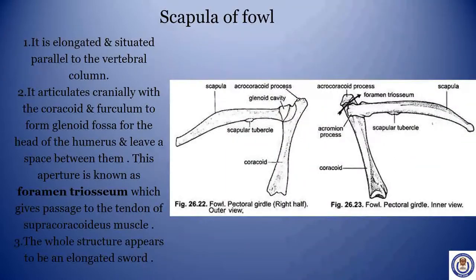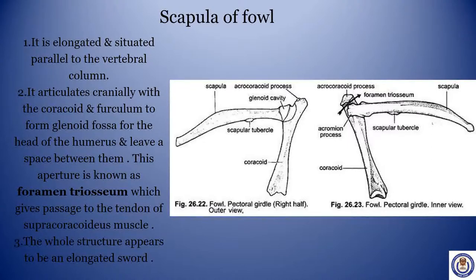Scapula of fowl. It is elongated and situated parallel to the vertebral column. It articulates cranially with the coracoid and furculum to form the glenoid fossa for the head of the humerus, leaving a space between them. This aperture is known as the foramen triosseum, which gives passage to the tendon of the supracoracoideus muscle. The whole structure appears to be an elongated sword.